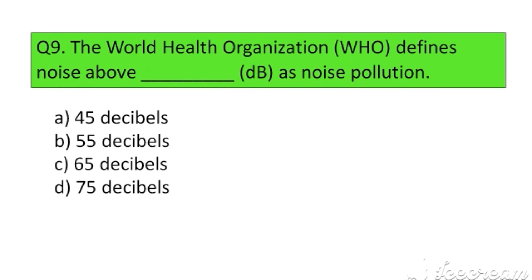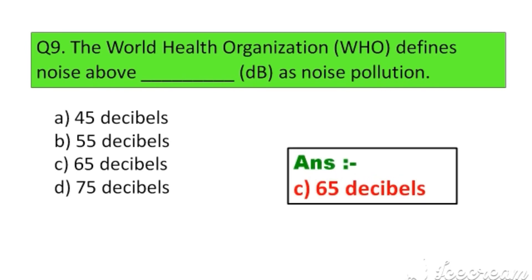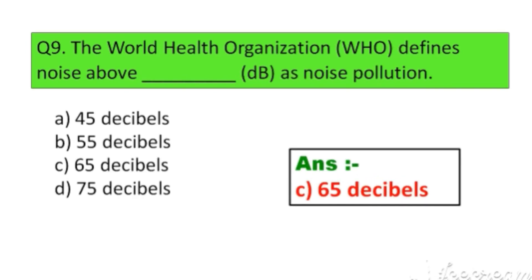Question number 9. The World Health Organization defines noise above how many dB as noise pollution? Option A. 45 decibels, B. 55 decibels, C. 65 decibels, D. 75 decibels. The right answer is Option C: 65 decibels.